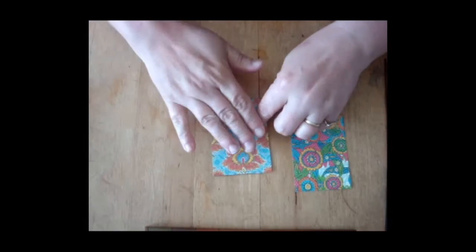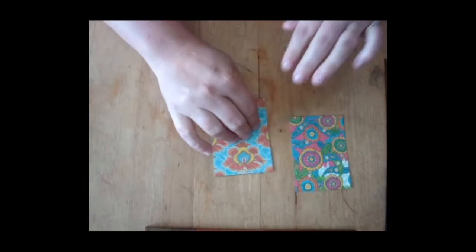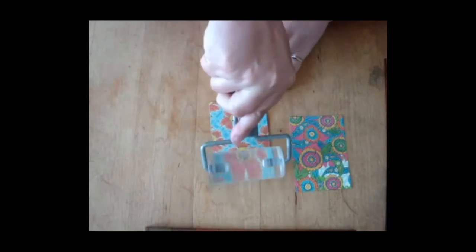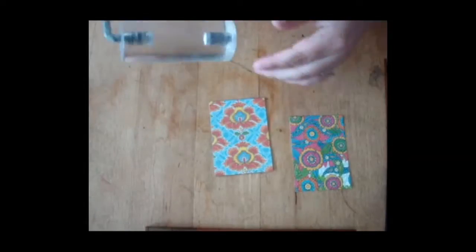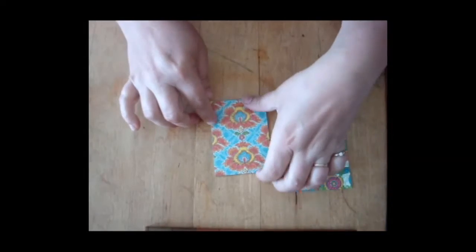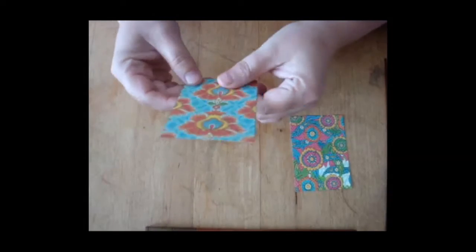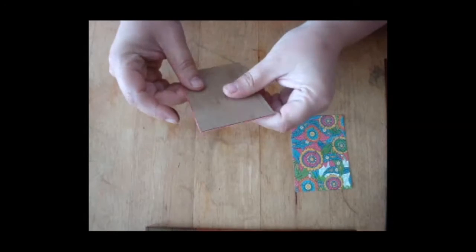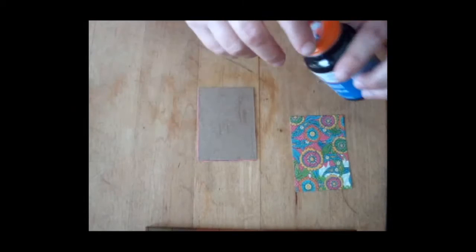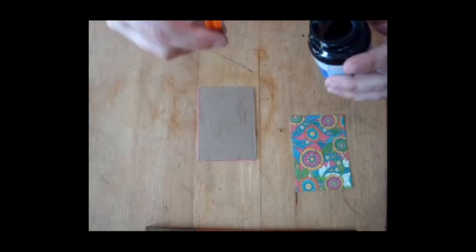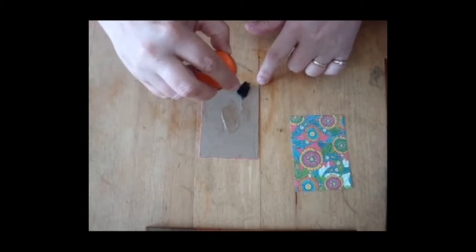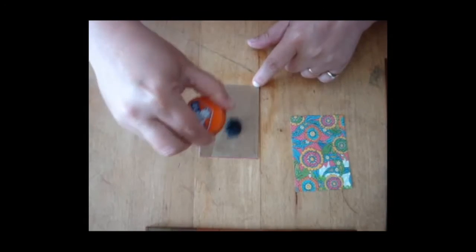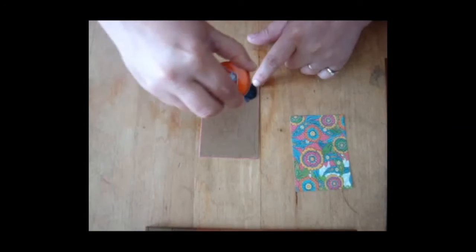Just apply it and press it down. If you have one you can use a burnishing tool. If not, just use your fingers. The bond is pretty much instant. You can take it apart, but it's sort of messy, you don't really want to do that.